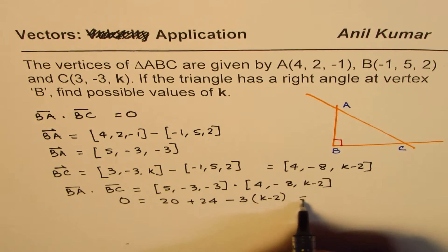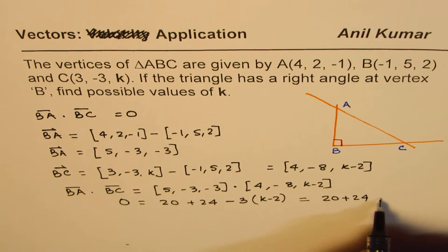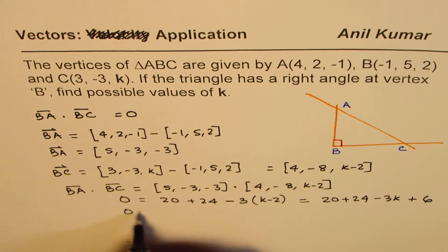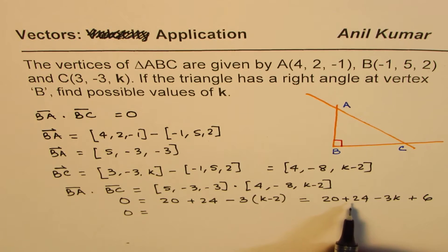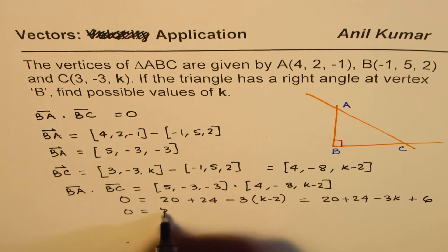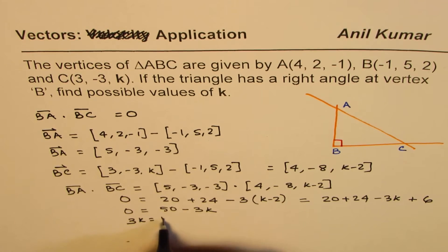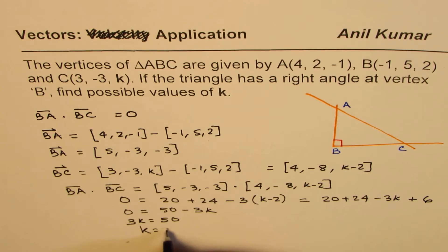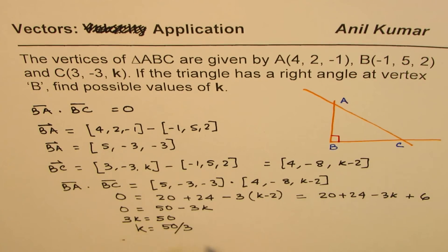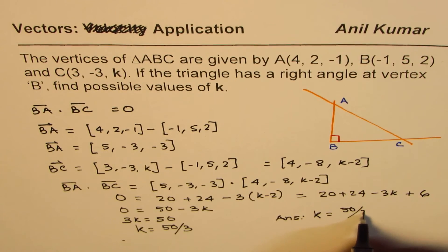Expanding: 20 plus 24 minus 3K plus 6. So 0 equals 20 plus 24 is 44, plus 6 is 50, giving us 50 minus 3K. Rearranging: 3K equals 50, so K equals 50 divided by 3. That is our answer: K equals 50/3.